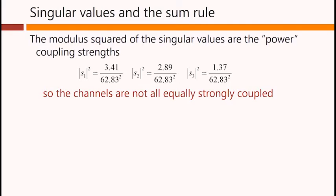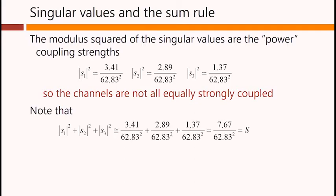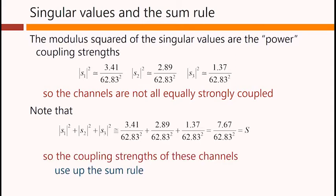3.41, 2.89, and 1.37 on the top line, with the same denominator throughout. Note, incidentally, that the sum of these power coupling strengths is the same number we got before by adding up the modulus squared of all of the matrix elements. So the coupling strengths of these channels use up the sum rule.